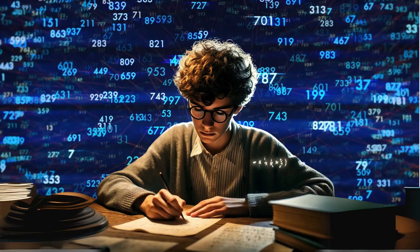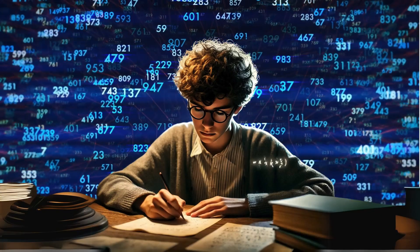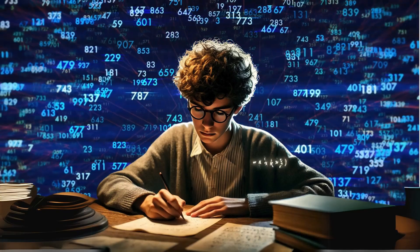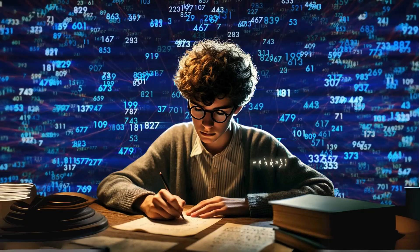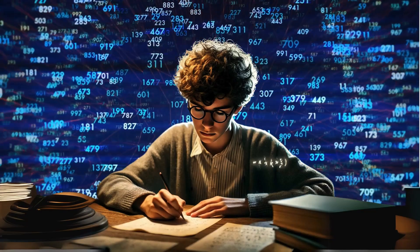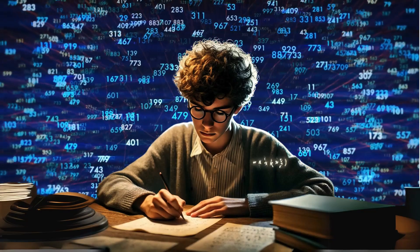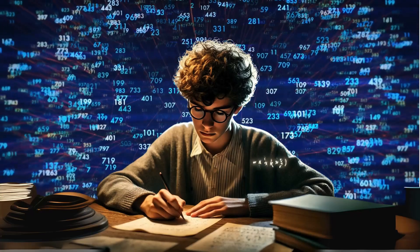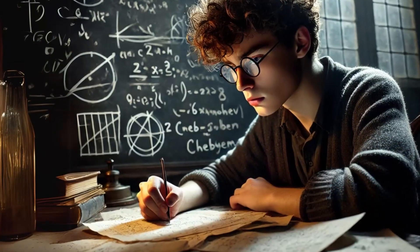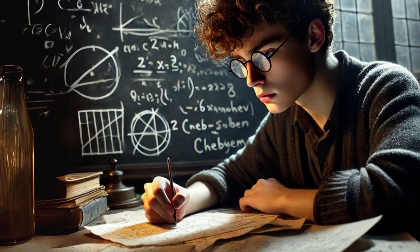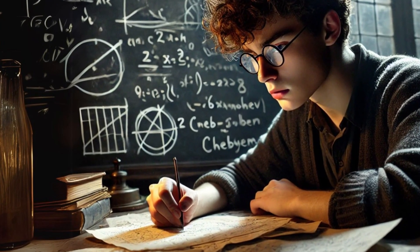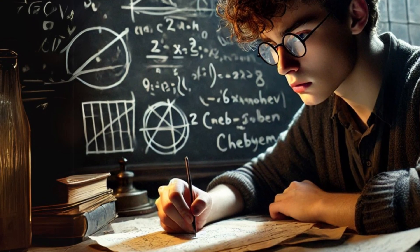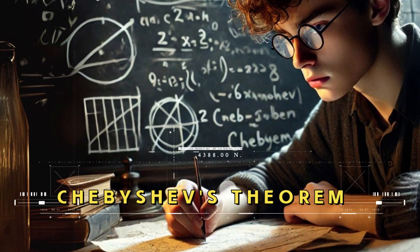By the time he was a teenager, Erdos had already begun making his mark. One of his first great insights? Prime numbers, those indivisible, mysterious building blocks of mathematics. He didn't just study them, he saw patterns hidden within them that others had missed. At just 18 years old, he found a beautiful, elegant way to prove something that had puzzled mathematicians for decades, Chebyshev's theorem.